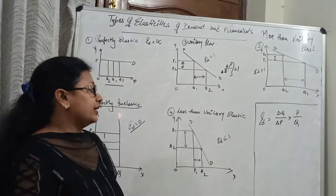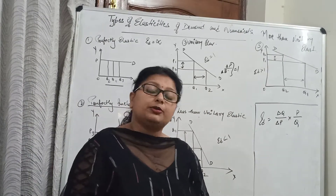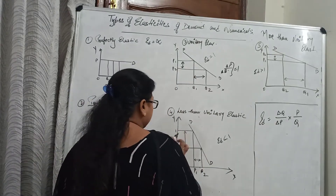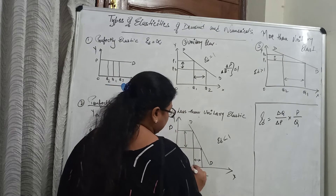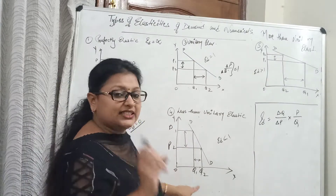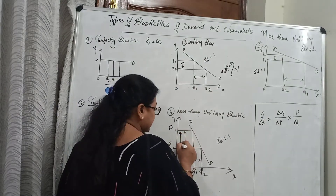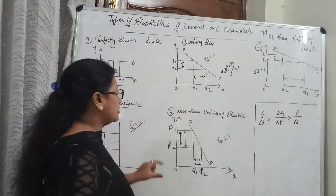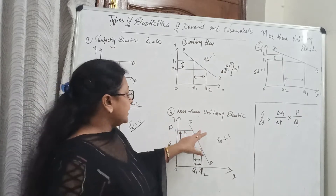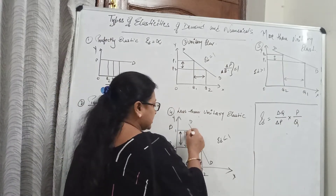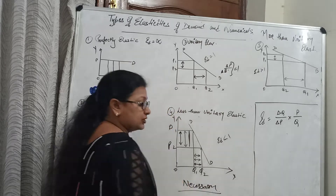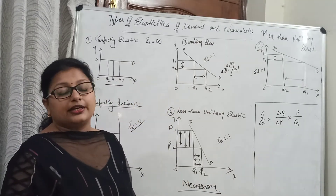The next case is less than unitary elastic. It means that your price change is different from the quantity change — if you have a large price change, quantity changes only a little bit. There is a huge gap in price change but very little change in quantity demanded. This is called less than unitary elastic. Examples include necessary goods such as medicines and daily consumer items.